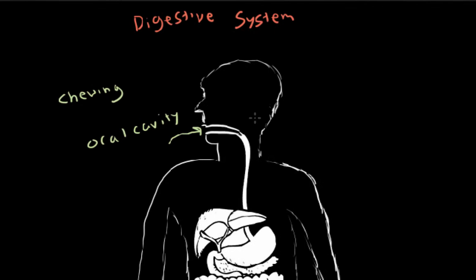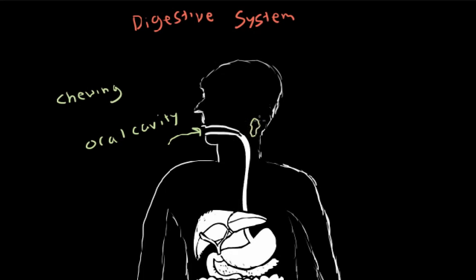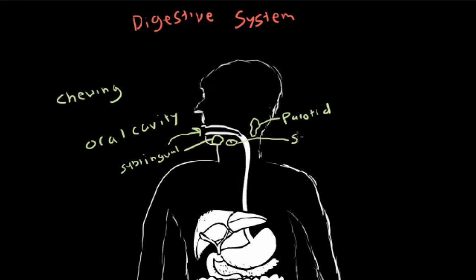Another thing that's going to happen in the mouth is there are three salivary glands. This one's called the parotid. All these salivary glands are going to release salivary amylase, and that's where our carbohydrates start to be broken down. The next one, under the tongue, is called sublingual — which makes sense, just under the tongue. And then the last one is going to be called submandibular, which makes sense because it's just under the mandible.